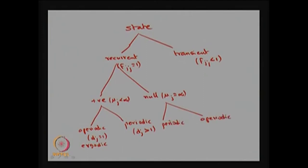The absorbing state is a special case of a positive recurrent state where the transition probability from a state to itself is 1. So this is the way you classify a state as recurrent or transient, positive recurrent or null recurrent, and each one could be aperiodic or periodic.